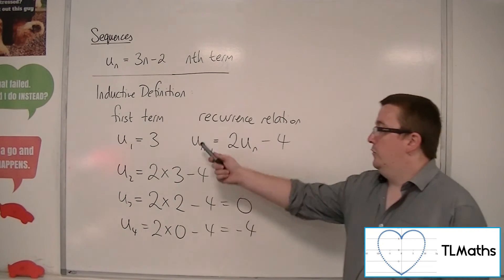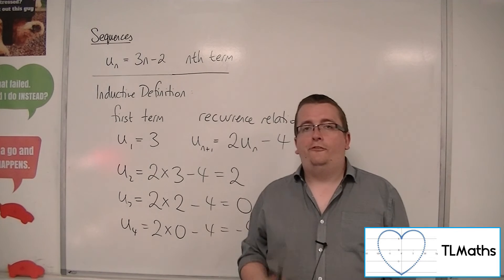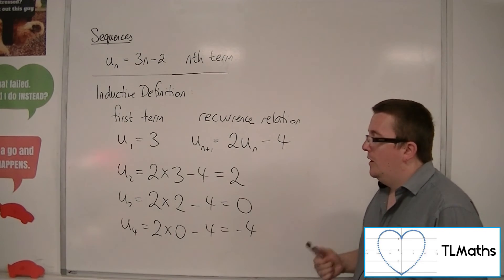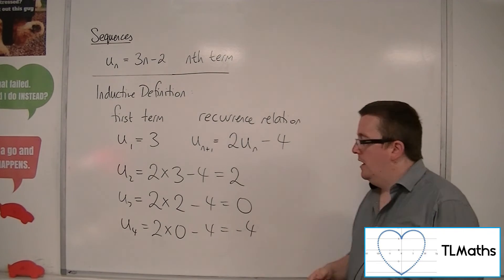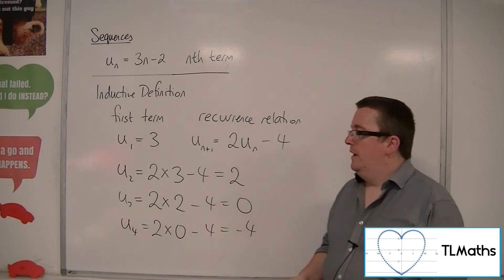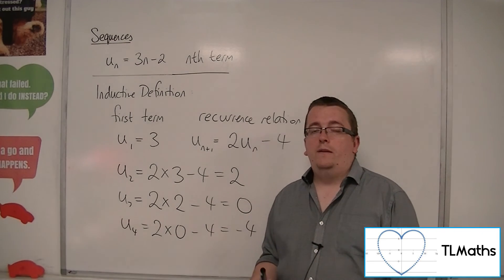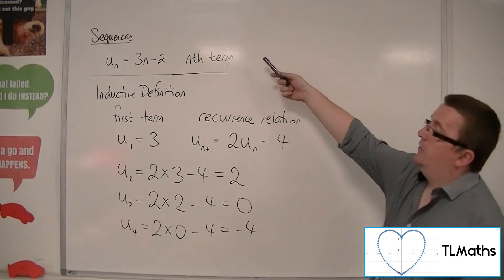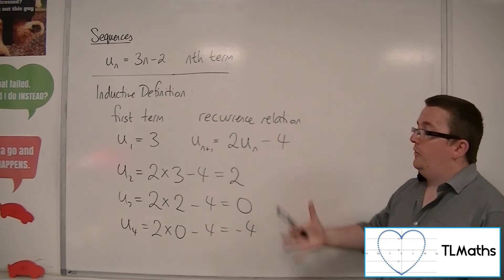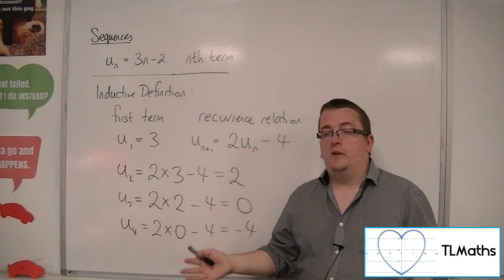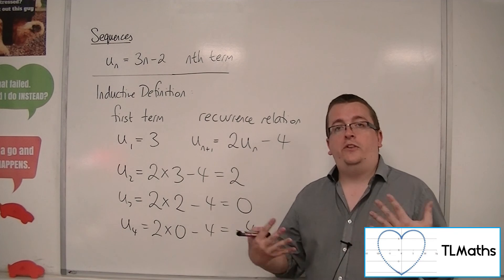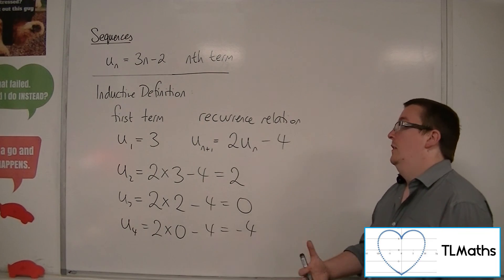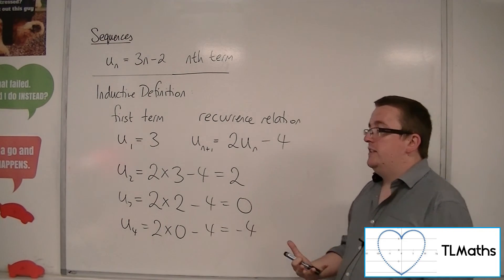These sequences — 3, 2, 0, minus 4 — do not have to follow a simple pattern like subtracting 1 each time or just multiplying by 2. They can be a bit all over the place. And subsequently, because we only know it as a term-to-term rule, I can't just say 'what's the hundredth term?' For the nth term formula, yes I could. But for this, I can't find the hundredth term without working out the first hundred terms in the sequence. So it's one of the drawbacks of an inductive definition, but it's another way of generating a sequence.